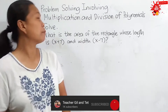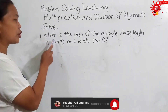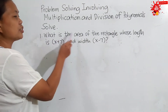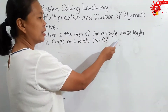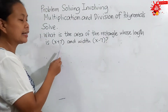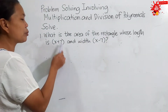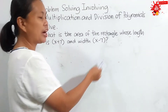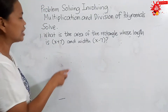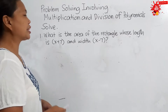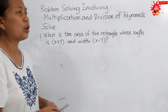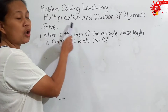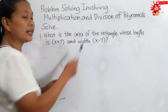Let us have example number one. We have to solve this problem: what is the area of the rectangle whose length is x plus 7 and width is x minus 7? Before we answer this problem, see to it that we know what operation we are going to use — is it multiplication or is it division?